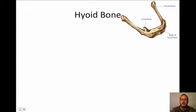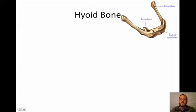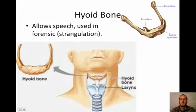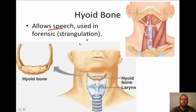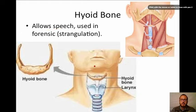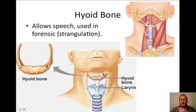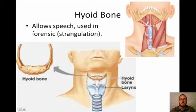The last bone is the hyoid bone, located in your throat at the top of the larynx. It anchors your tongue and allows speech. Uniquely, it does not touch any other bones — it's anchored in place by tendons, ligaments, and muscles. In forensics, a broken hyoid bone is one of the first indicators looked for in a strangulation case. Several muscles, like the mylohyoid and sternohyoid, are named after it.